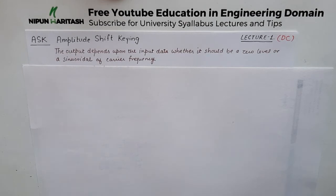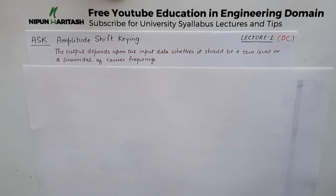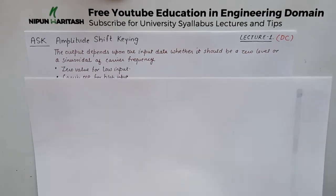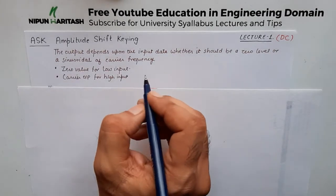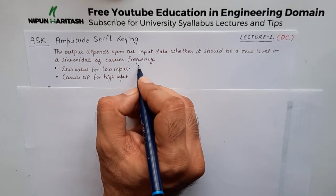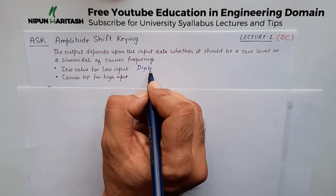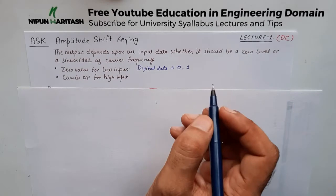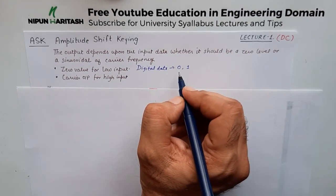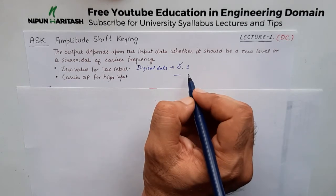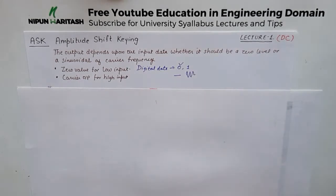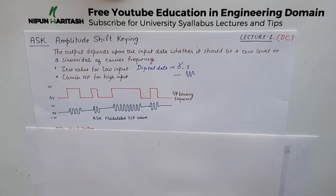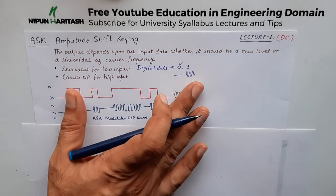The modulated output will depend upon the input data — whether it should be a zero or some sinusoidal of carrier frequency. This is pretty simple. We assign a zero value for low input, because we are sending digital data we'll have zeros and ones in succession. We assign a zero value for low input and some sinusoidal for one.